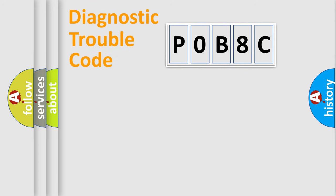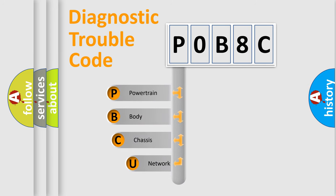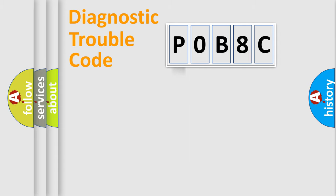Let's do this. First, let's look at the history of diagnostic fault code composition according to the OBD-2 protocol, which is unified for all automakers since 2000. We divide the electric system of an automobile into four basic units: Powertrain, Body, Chassis, and Network.